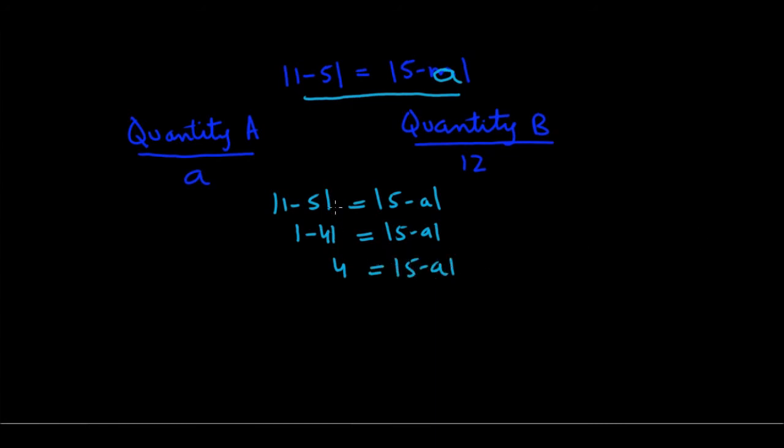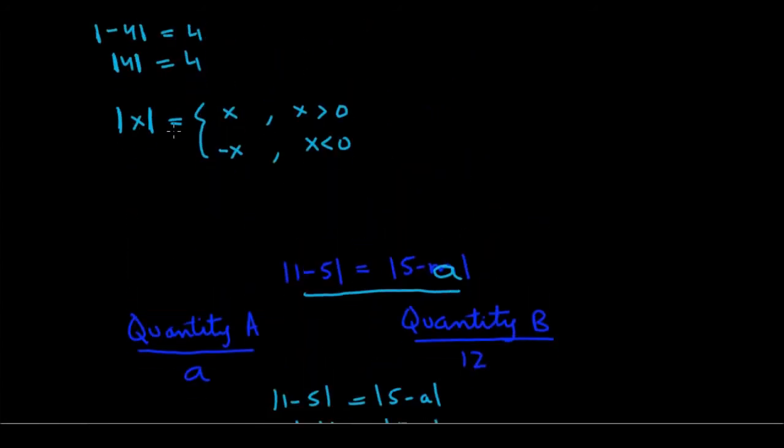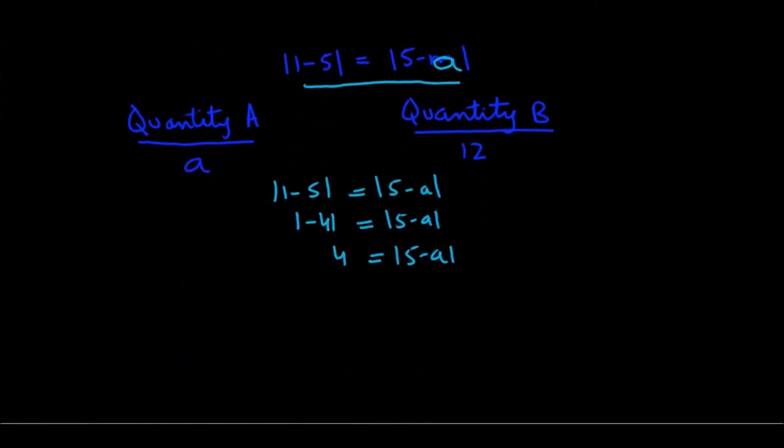Now just like in the above definition for absolute value that we gave, that absolute value of x can be x or negative x, we'll use the same concept here. We'll say that absolute value of 5 minus A could equal 5 minus A. Here we are assuming that 5 minus A is a positive value because if it's positive, then when we take out the absolute value it's still the same thing. But we don't know for sure, right? So the other option is that 5 minus A might be negative, so I just put a negative outside.